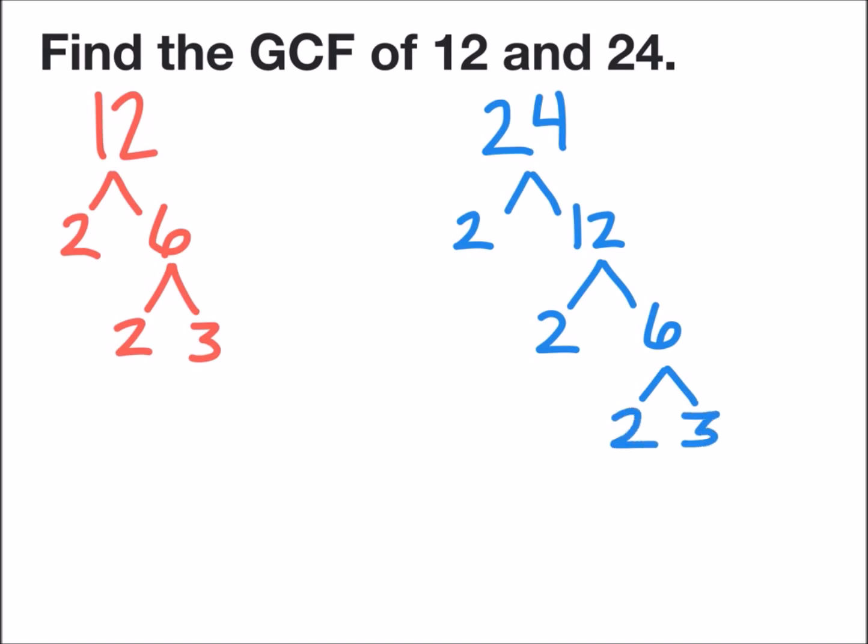Now, we must look at which prime factors are common to both factor trees. I do this by starting with the largest prime number and working backwards. The number 3 is common to both trees, so I'm going to highlight it in both trees. On your page, it might be easier to circle the numbers.